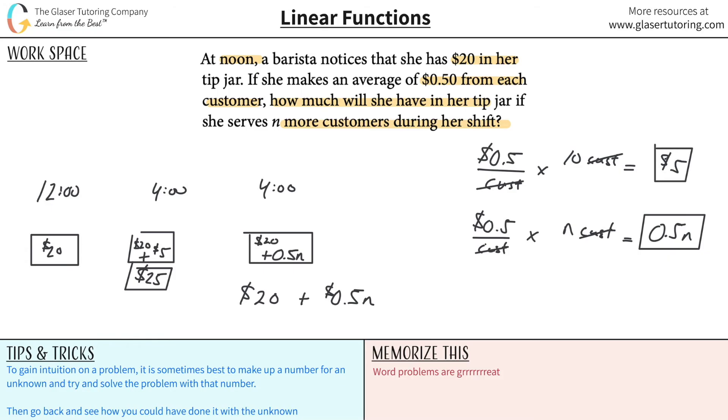This will represent now the number at the end. This will represent the number in her tip jar, or how much she will have in her tip jar. You could also say that this is equal to the amount in the tip jar, or something like that if you want. It doesn't really matter. But this would be the expression.